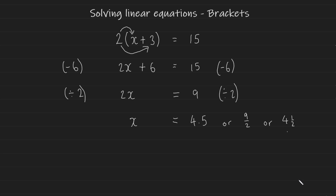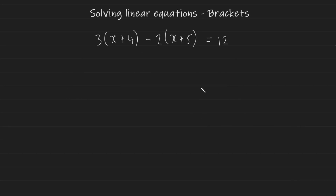That's a simple example of solving a linear equation with a single bracket. Now let's look at a slightly more complicated question — same idea and same technique. The first step is to expand the brackets: distribute the 3 into all terms inside, giving us 3x, and positive 3 multiplied by positive 4 gives us positive 12.